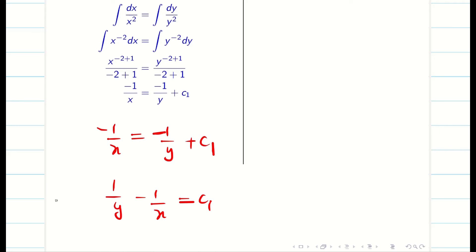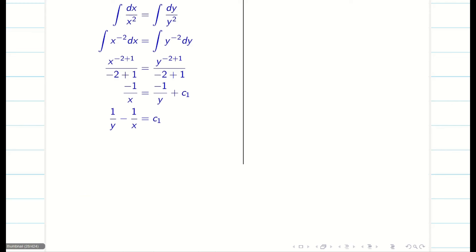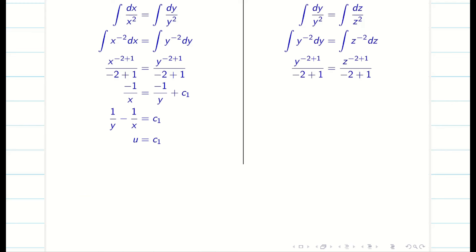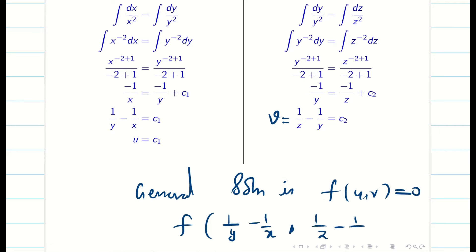Once we get the simplified version, we call this u. Now u is done. Similarly, solving the second and third ratios by integration gives 1/z − 1/y = c₂, and we call this v. Therefore, the general solution is f(u, v) = 0, that is f(1/y − 1/x, 1/z − 1/y) = 0.